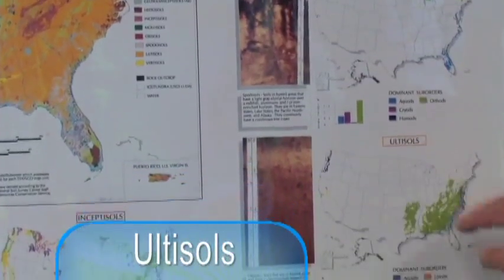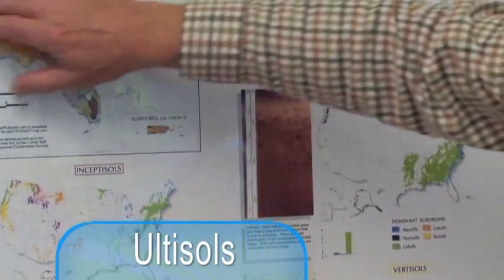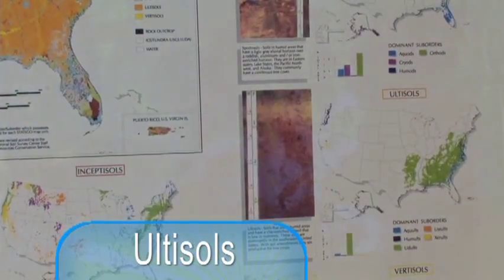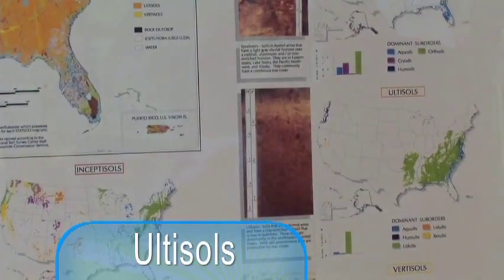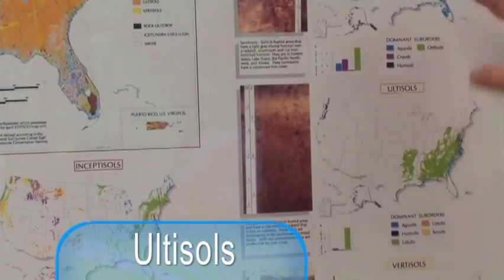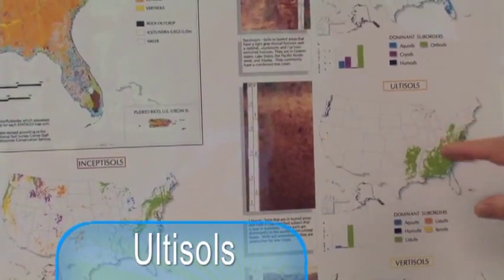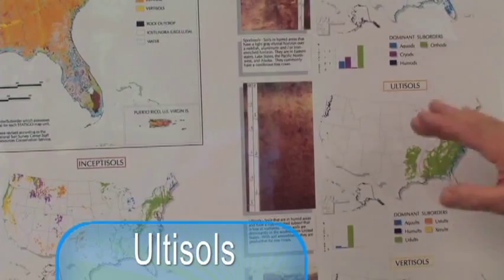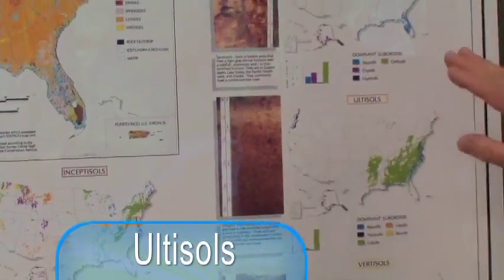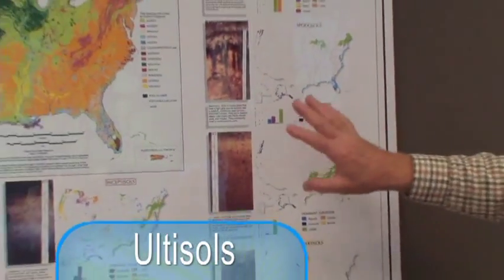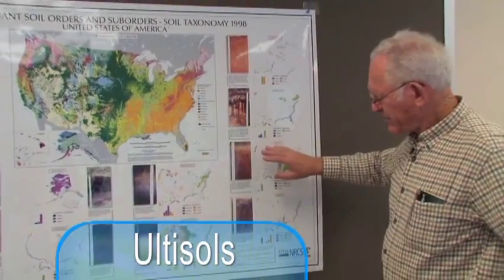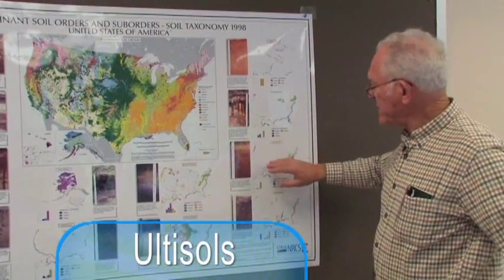The subsoils are quite gray. Then the ultisols represent the major soils of the southeastern part of the United States. These tend to be soils where the topsoil tends to be sandier than other subsoils. The clay has been leached down over time, and these tend to be relatively low fertility, acidic pH soils.